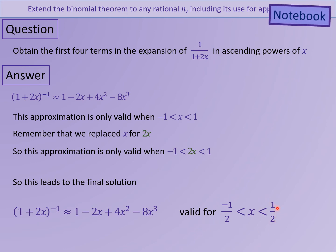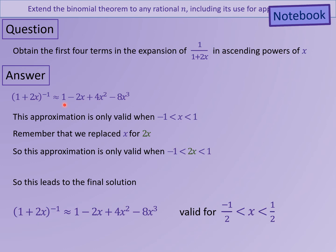Now try using your calculator again but this time for an x value between those two numbers — something like 0.1. For 0.1, we get 1 over 1 plus 2 times 0.1, which is 1 over 1.2. If you now try putting 0.1 into the other side — 1 minus 2 times 0.1 plus 4 times 0.1 squared minus 8 times 0.1 cubed — you should notice the two answers are very, very similar. That's why we can use this as an approximation tool for functions that look like that.